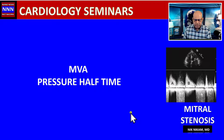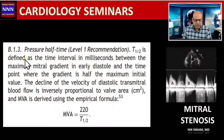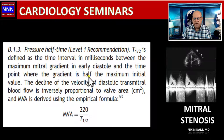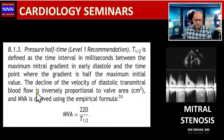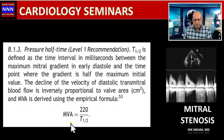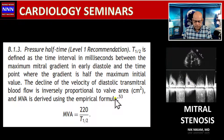Pressure half-time is defined as the time interval in milliseconds between the maximum mitral gradient in early diastole and the time point where the gradient is half the maximum initial value. The decline of the velocity of diastolic transmitral blood flow is inversely proportional to valve area. Based on this technique using a constant of 220, the mitral valve area is calculated by dividing 220 by the pressure half-time measured on pulsed Doppler across the mitral valve orifice.